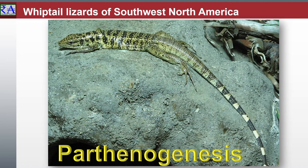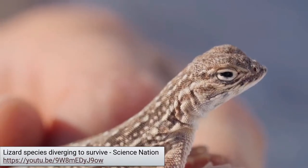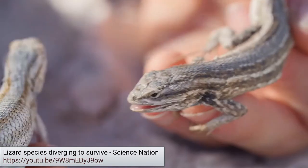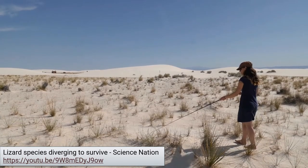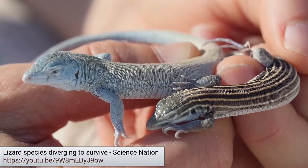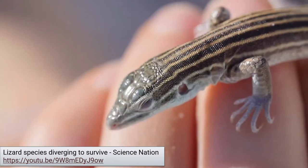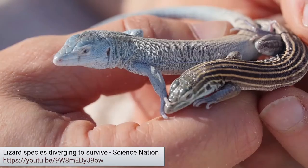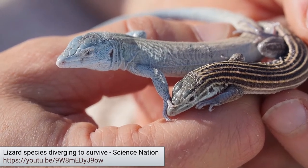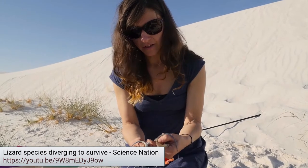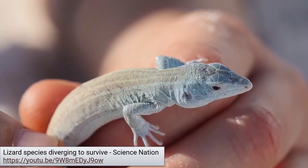Parthenogenesis occurs naturally in many plants, some invertebrate animal species including nematodes, water fleas, some scorpions, aphids, some bees, some phasmidia, and parasitic wasps. This is also witnessed in vertebrates such as some fish, amphibians, reptiles, and rarely birds. Normal egg cells form via meiosis and are haploid, with half as many chromosomes as their mother's body cells. Haploid individuals, however, are usually non-viable, and parthenogenetic offspring usually have the diploid chromosome number. The chances for reproductive mutations are still possible, seen mostly during the gynogenesis stage triggering the development of the egg cell into an embryo. This is where random mutations can happen, and where adaptive selection forces may be seen.